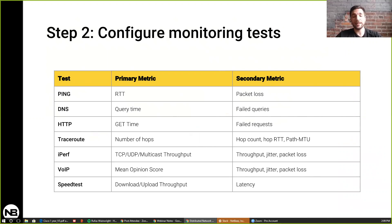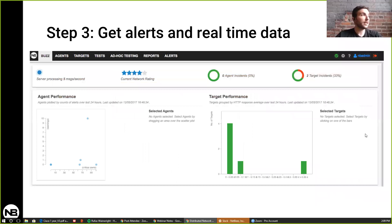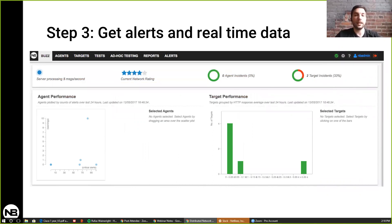You'll be able to configure monitoring tests such as ping, DNS, HTTP, and traceroute to specific targets like servers and applications, as well as iPerf speed tests and VoIP tests which gauge traffic and bandwidth across your network. Lastly, you get alerts and real-time data all in the dashboard. You're able to see what's going on at that point in time, as well as what was going on three weeks ago at 7 o'clock at night, so you can see exactly what was happening when an end user logged a complaint.